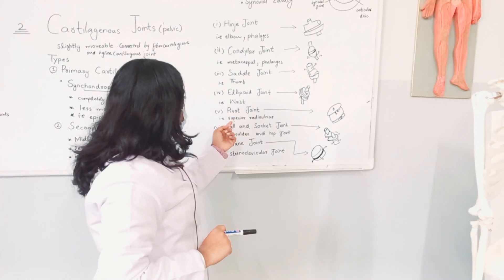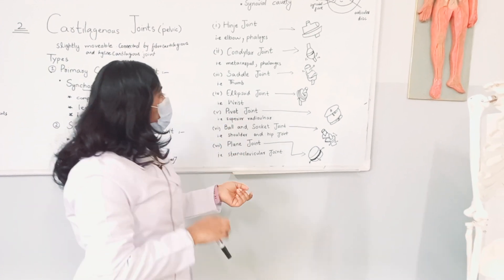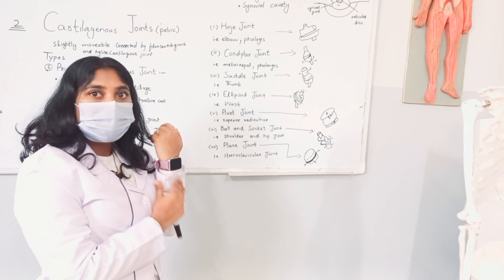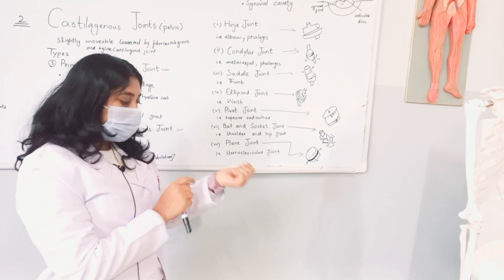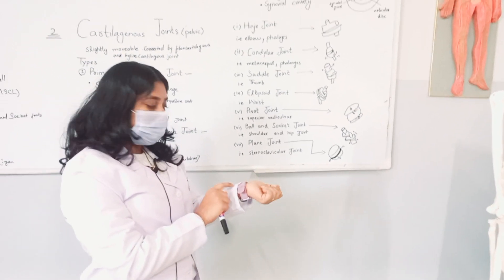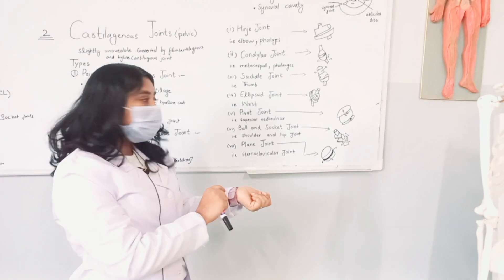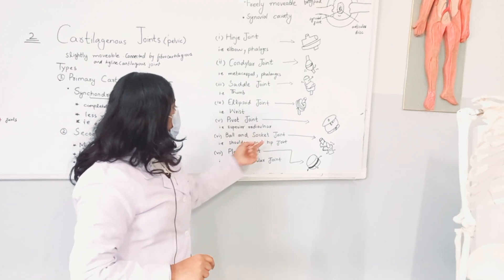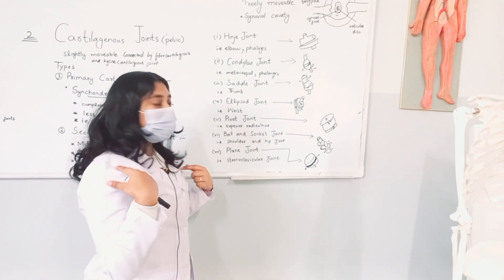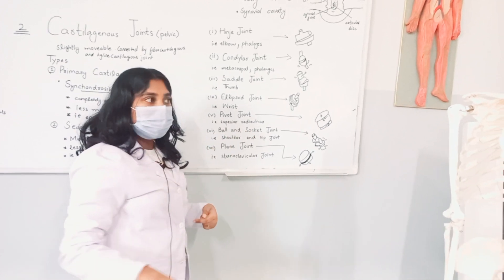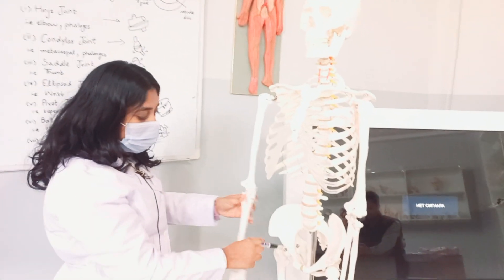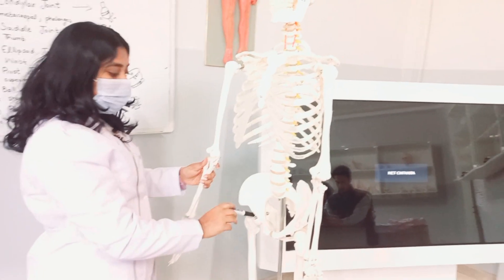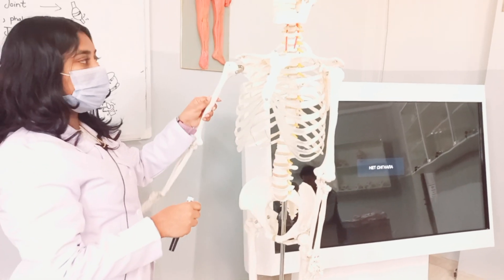The pivot joint involves the superior radio-ulnar joint. This is the superior view showing radius and ulna. The ball and socket joint involves the shoulder and hip joint, which allows 360-degree full rotation.